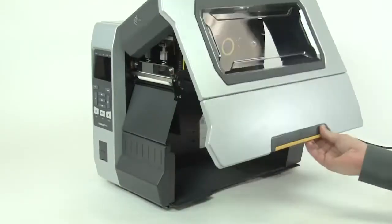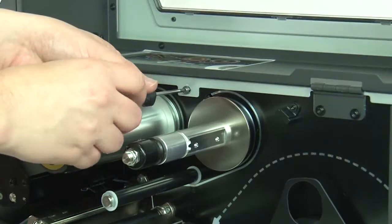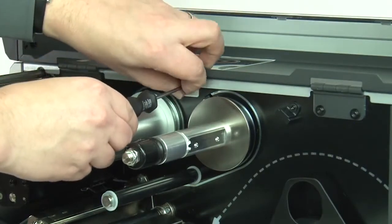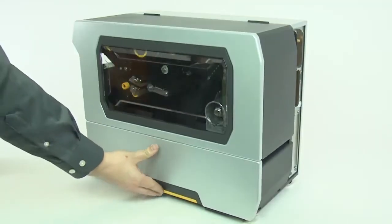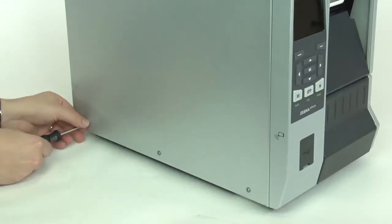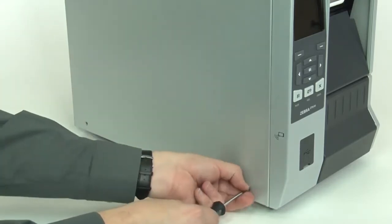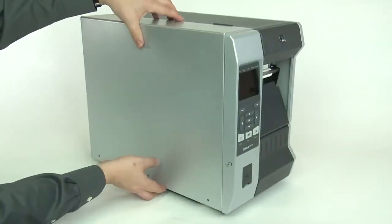Open the media cover. Remove the electronics cover mounting screw. Close the media door. Remove the three electronics cover mounting screws. Lift off the electronics cover.